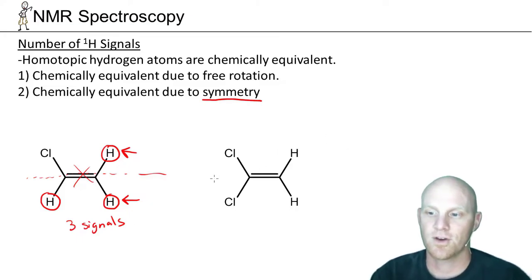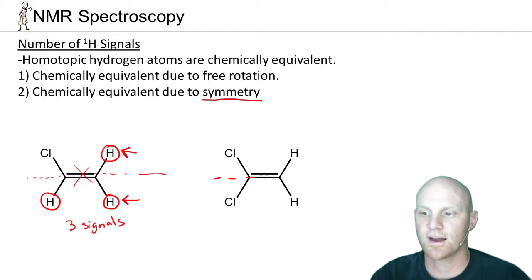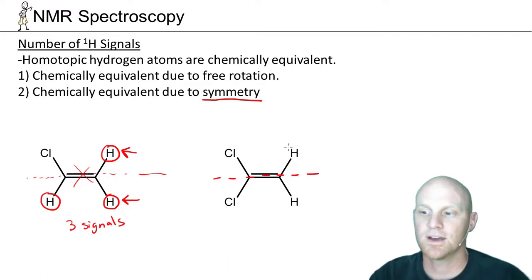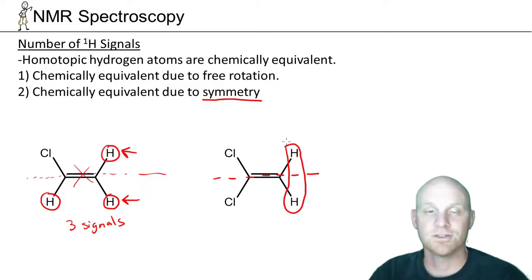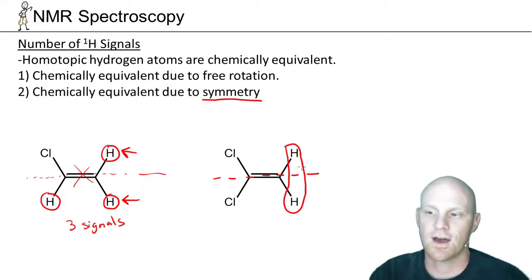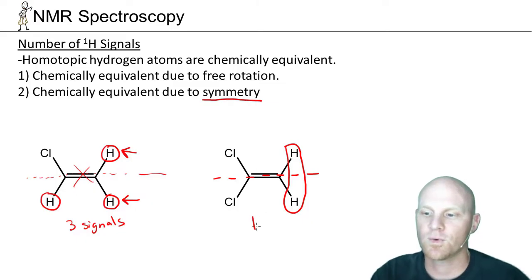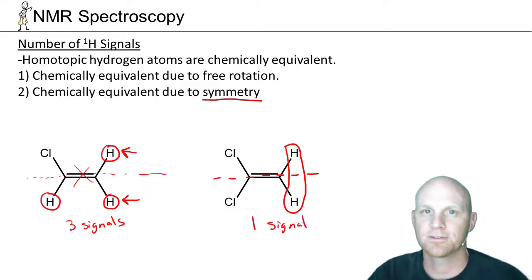On the right-hand side, though, notice that a plane of symmetry actually is present — the lower hydrogen has been replaced with a chlorine. Having this plane of symmetry, these two hydrogens are now equivalent — not due to free rotation, but due to symmetry instead. So this compound has just one unique hydrogen environment and only one signal.